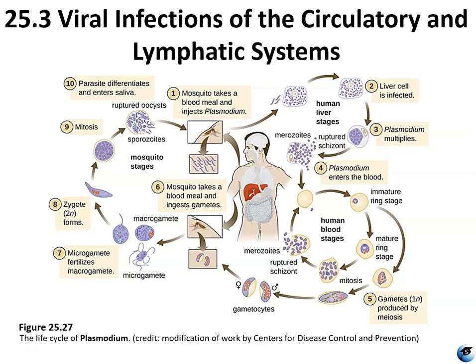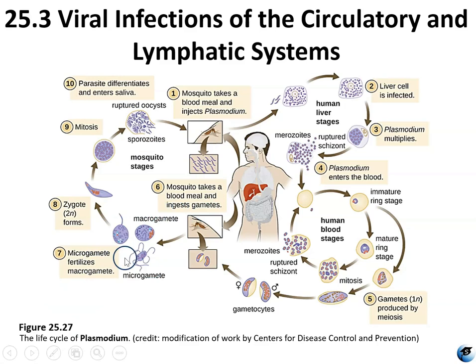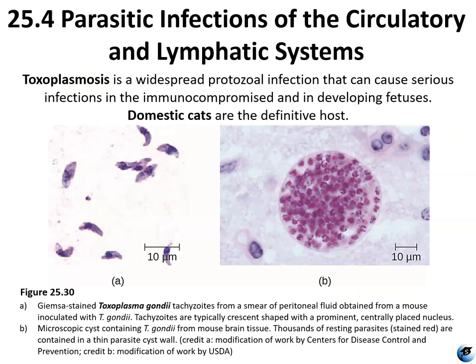Know these stages as well as the symptoms associated with both uncomplicated and severe malaria. First, a mosquito takes a blood meal and injects the human host with Plasmodium. Next, liver cells become infected, where Plasmodium multiplies. It then enters the blood, and reproduction and gametes are produced by meiosis — this is where potential mutations occur. Next, perhaps a different mosquito takes a blood meal and ingests those gametes. Fertilization occurs, a zygote is formed, it reproduces by mitosis, and ruptured oocysts enter the mosquito's saliva.